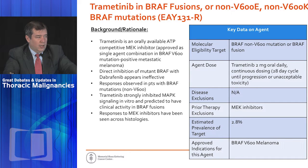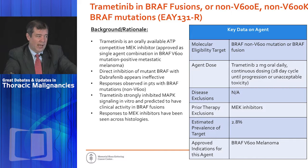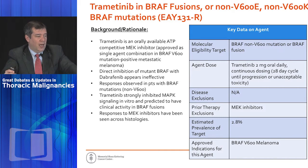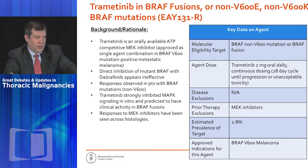Another arm is Trametinib in BRAF fusions or non-V600E, non-V600EK BRAF mutations. We know what to do with V600E melanoma and somewhat with V600E lung cancer — but what about the other mutations, the non-V600E? This trial looks at the use of the MEK inhibitor Trametinib for those patients.